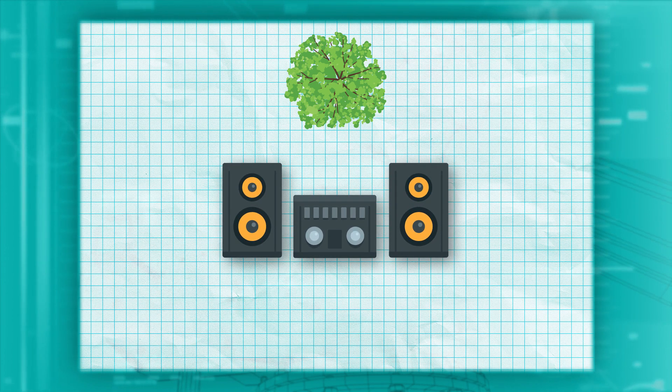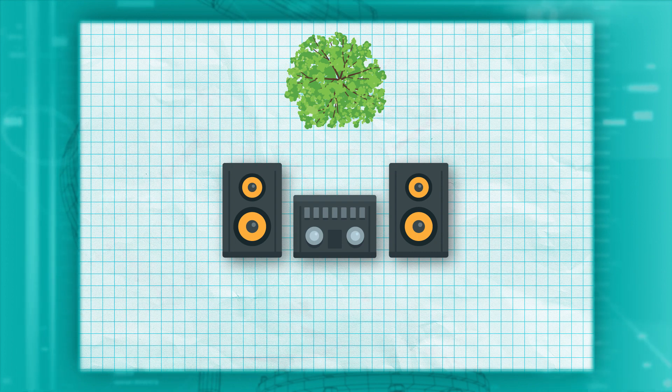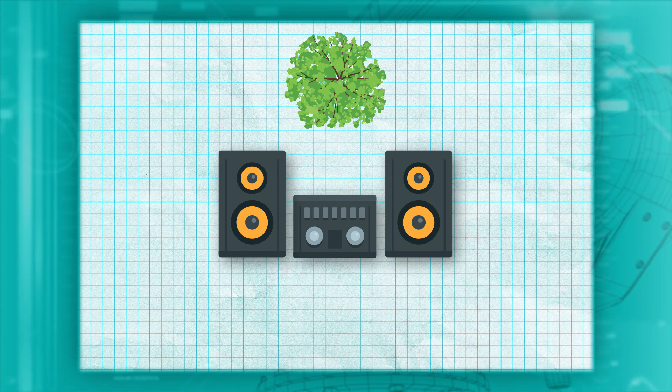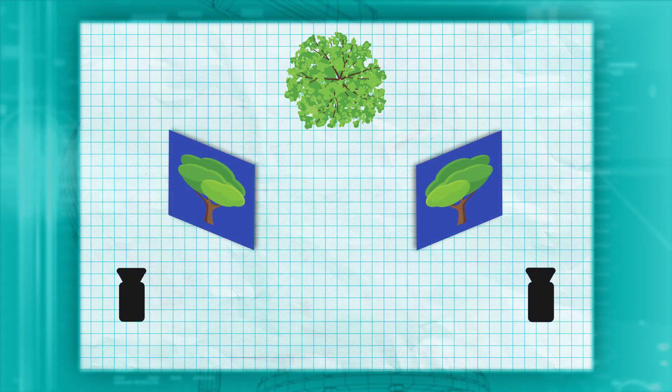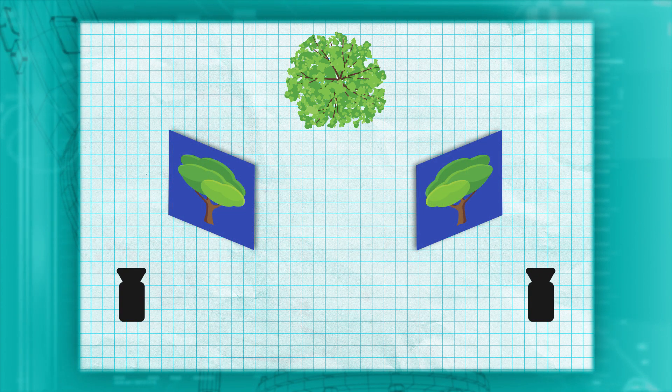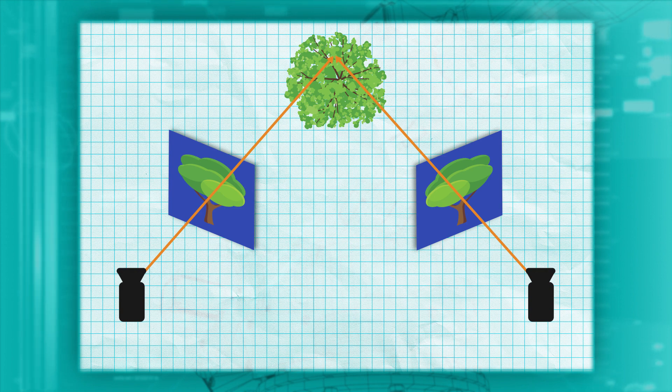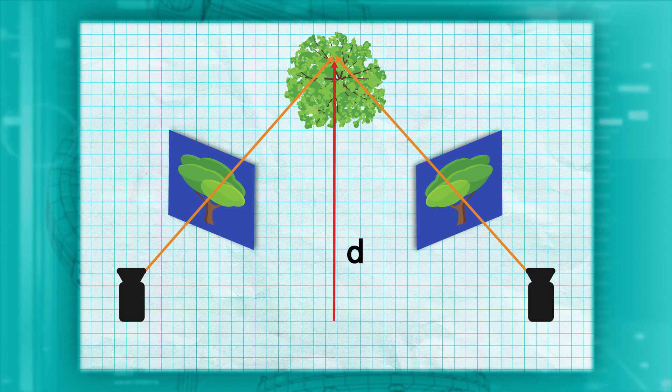Just like stereo sound produces different sound signals for your right and left ears, stereo cameras collect two simultaneous images with a right and left camera. The stereo cameras are arranged parallel to each other and are a known distance apart. From the simultaneous images they collect, we can calculate where the tree is relative to the cameras.